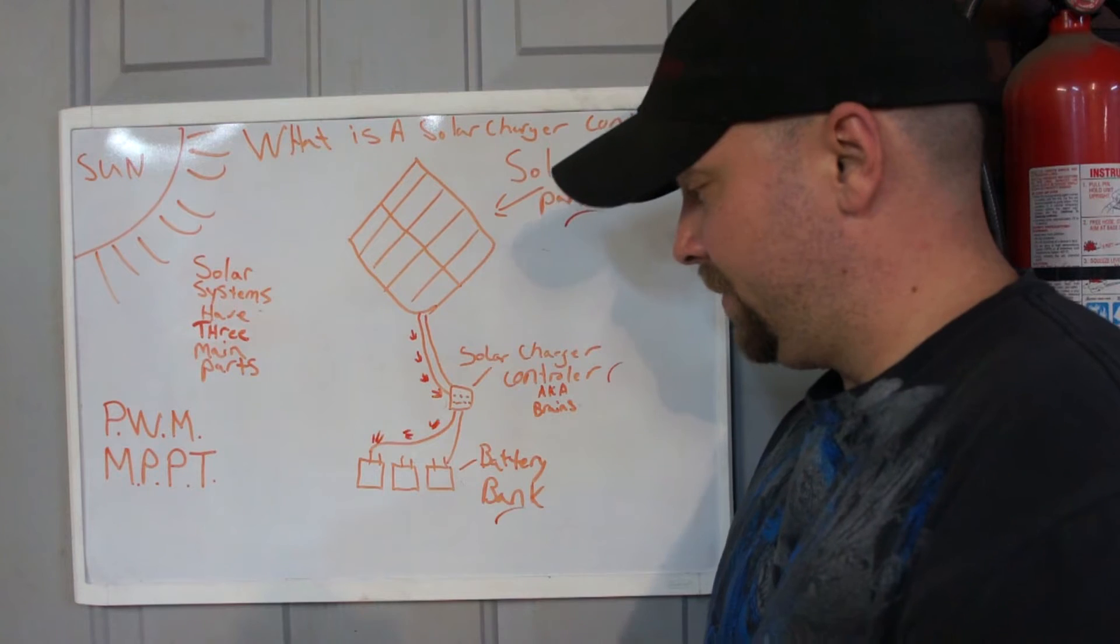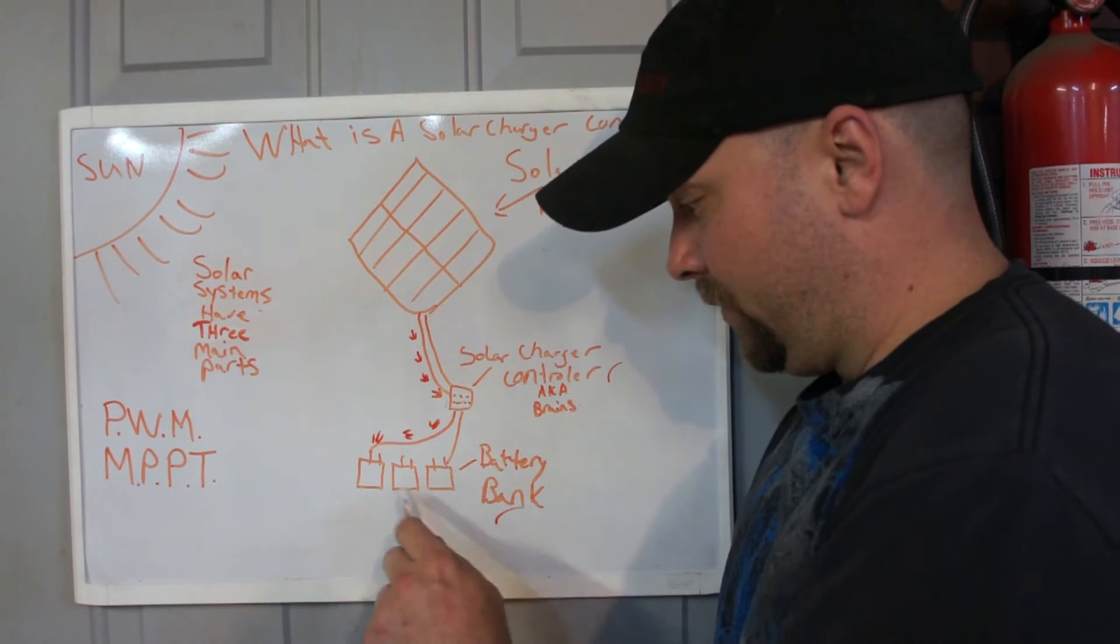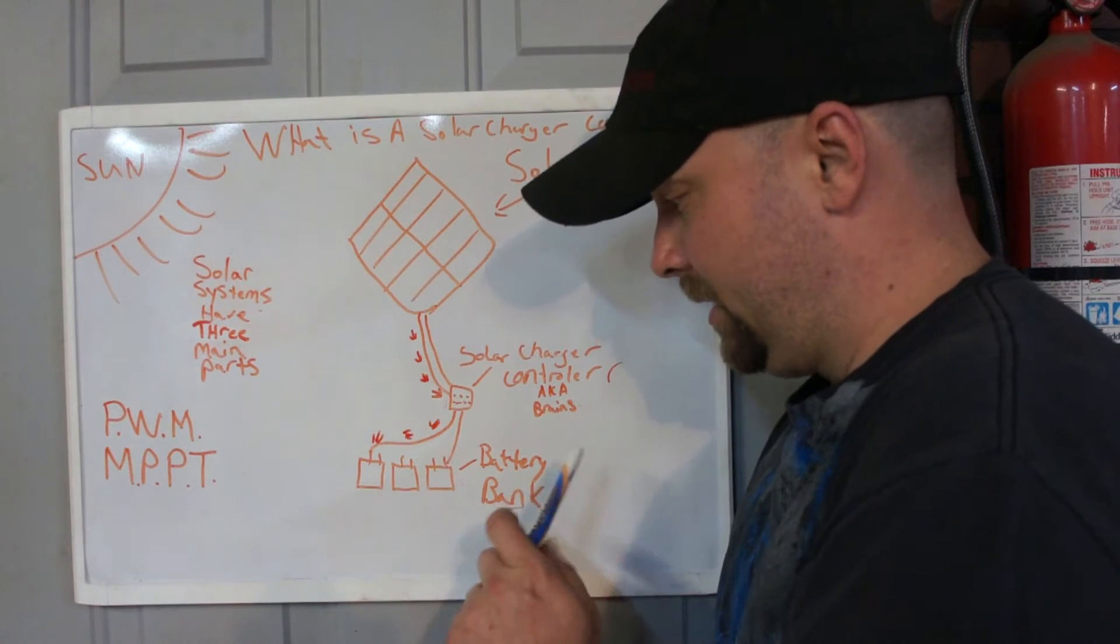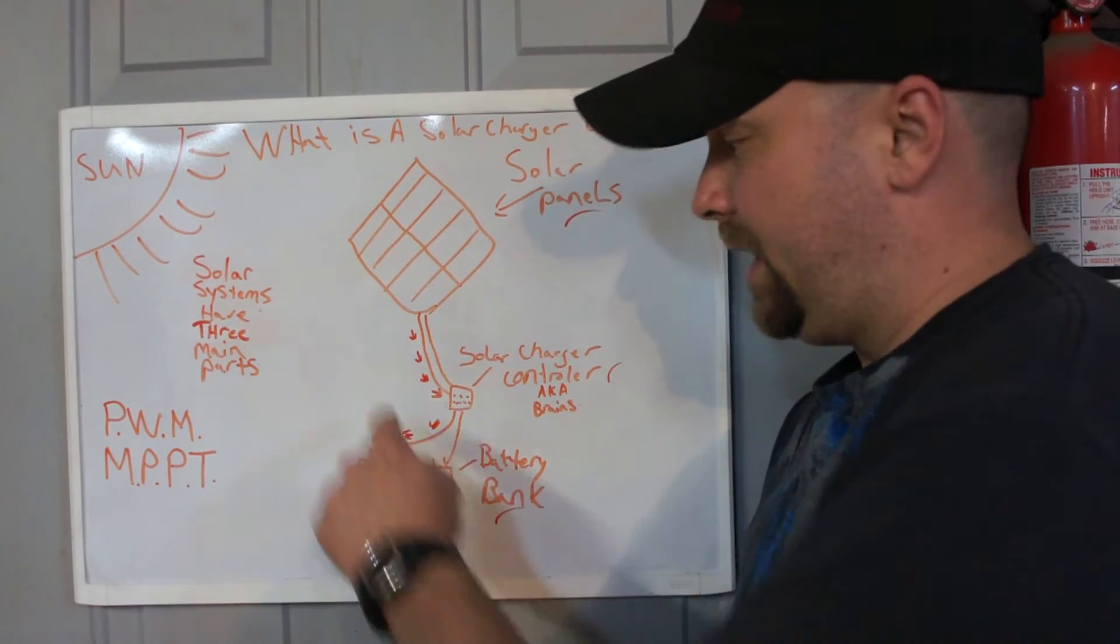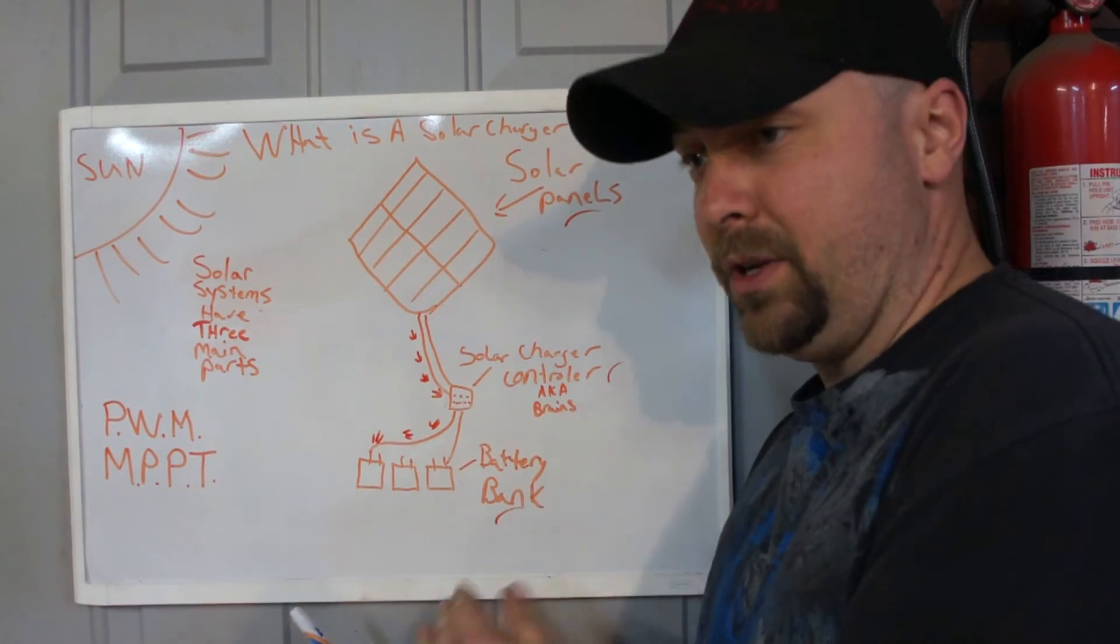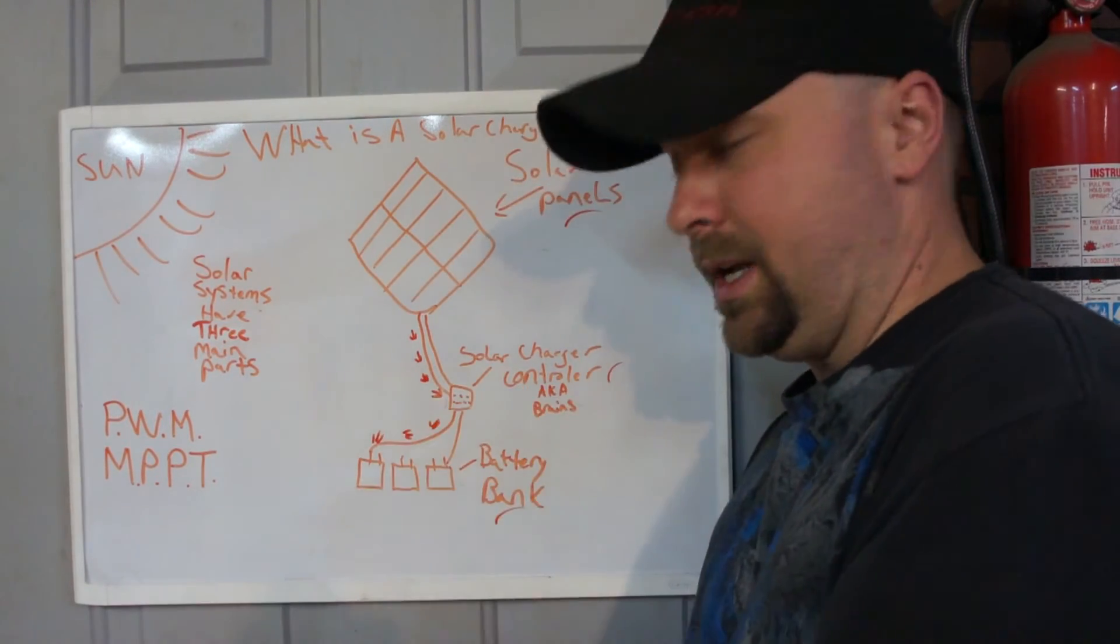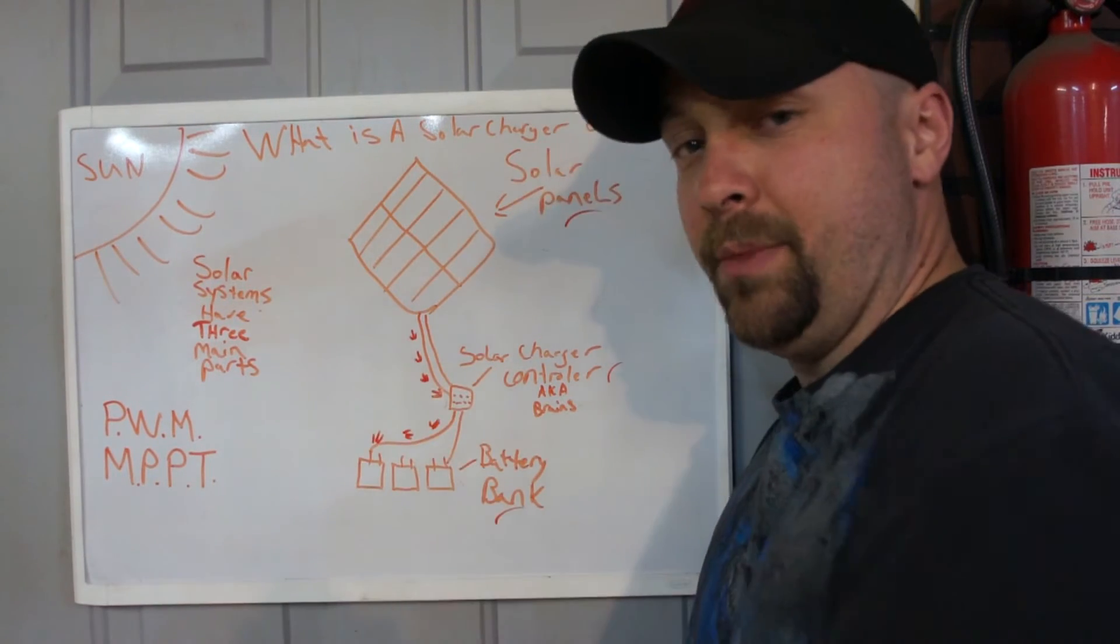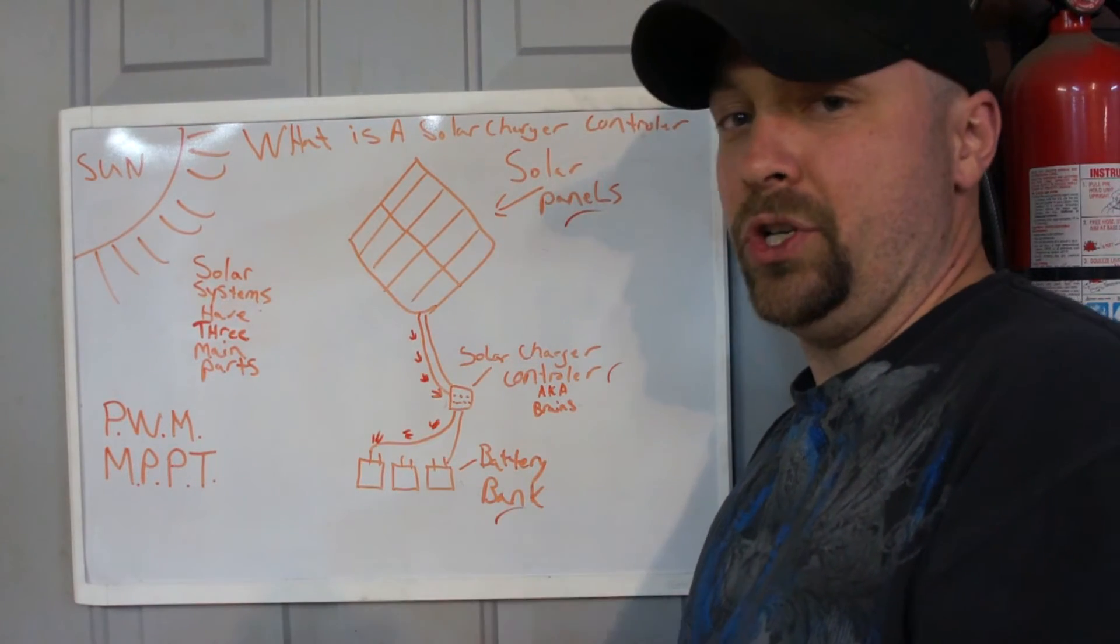So that's the first major control that your solar charger controller has: the ability to see that power is coming from the panels, it has enough to send it to the batteries, and it will complete the circuit and allow the energy to come from the panels and go into the batteries and start charging your batteries.